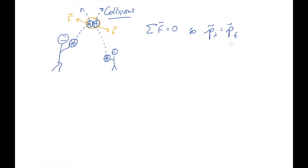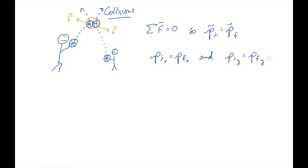So really this equation in two dimensions can be separated into two equations: the initial x-component of momentum equals the final x-component of momentum, and at the same time, the initial y-component of momentum equals the final y-component of momentum. Those two have to be true simultaneously in a two-dimensional collision. In three dimensions, you would have three of them.